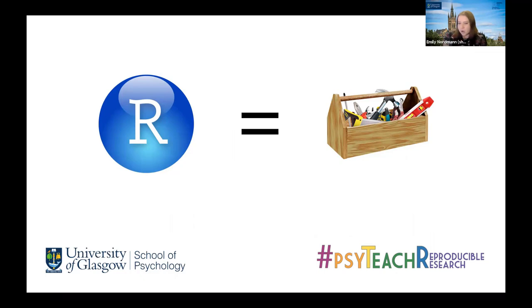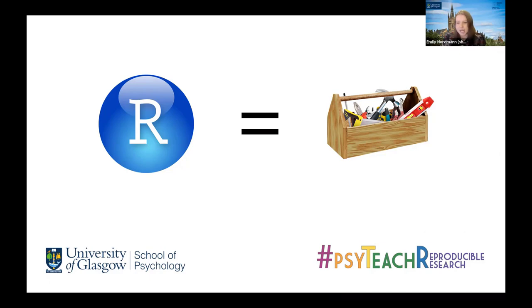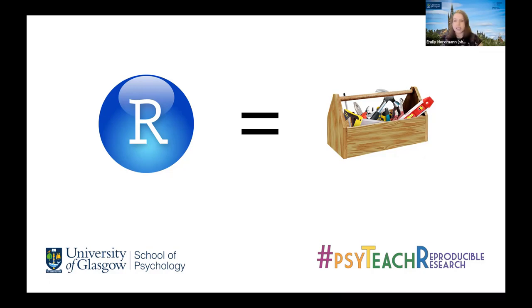They write up the results of the study in an individual quantitative report, and the focus again is on transparency not the results. The first section of the results section must be 'deviations from your pre-registration.' It reinforces the idea that exploratory and confirmatory research are both absolutely fine, but you have to say which one it was. The key thing about all of these assessments is that R is just the tool we have used to achieve our goals — most of it could be done with Excel and SPSS if you use syntax and formulas, although it would be much more difficult.